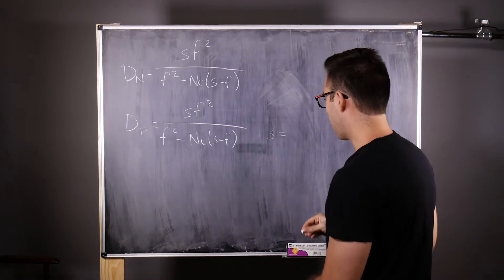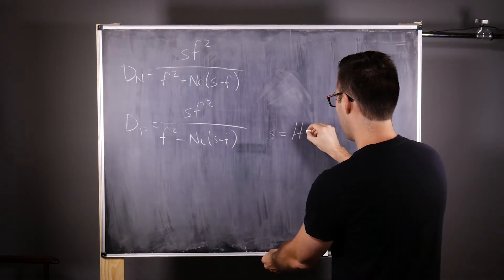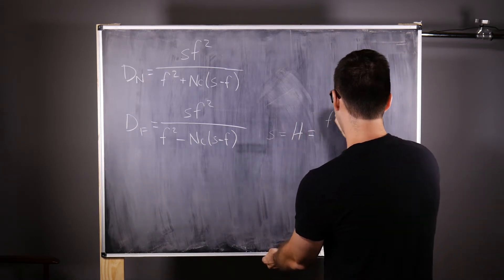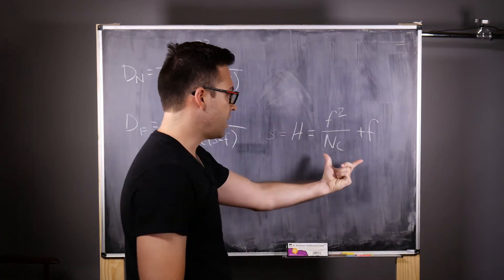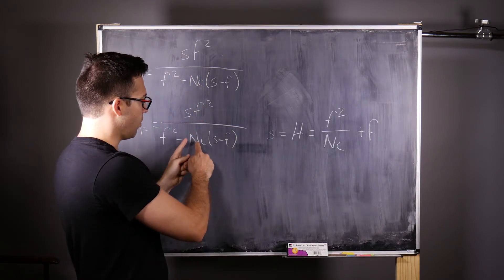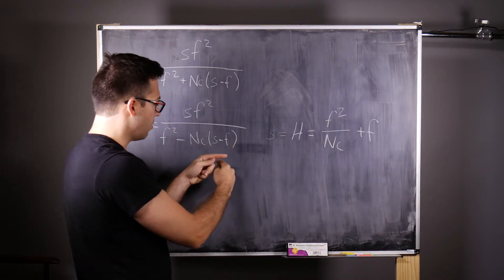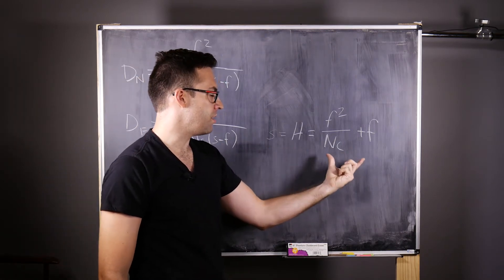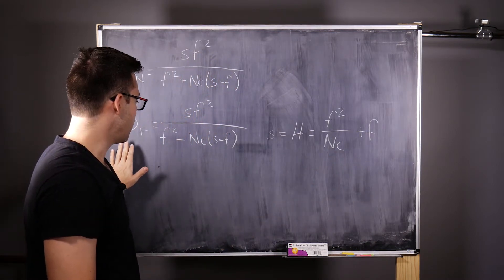So S is equal to — and we're going to use a new nomenclature for this special subject distance S — we're going to call it H, capital H for hyperfocal distance. It's going to be equal to F squared over Nc plus F. These are the same thing; we're just going to change the name to H because it's a special distance. And this is the hyperfocal distance — it's the subject distance, the focusing distance, which is going to enable the depth of field in the far region to go to infinity.